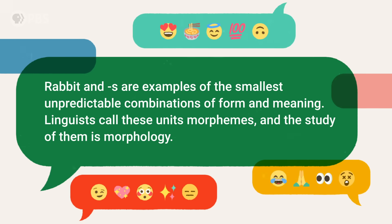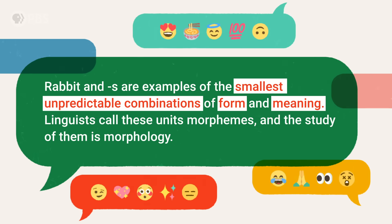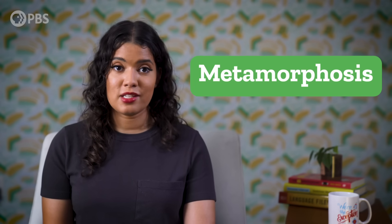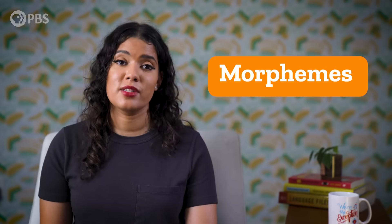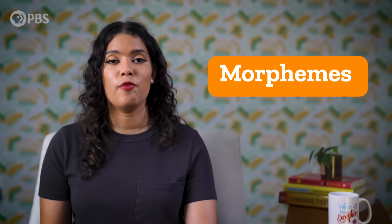Rabbit and -s are examples of the smallest unpredictable combinations of form and meaning. Linguists call these units morphemes, and the study of them is morphology. That's morph, as in metamorphosis or anamorphs — it's from a Greek word meaning shape or form, because morphemes can stick to each other to change the shape of a word.